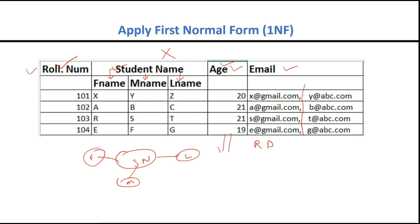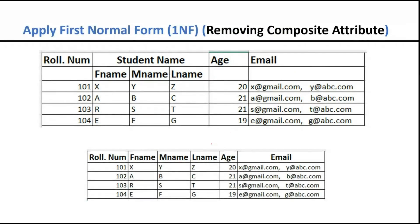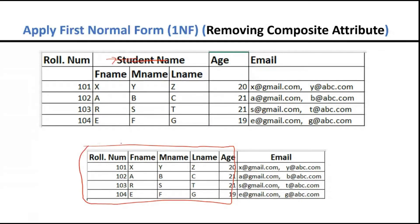To remove a composite attribute, simply remove the composite attribute name and replace it with its parts: role number, first name, middle name, and last name as separate columns. If you consider just this portion of the table, it is now normalized to 1NF — not completely normalized, but it has passed the first test. However, there is still a problem with the last attribute, email.